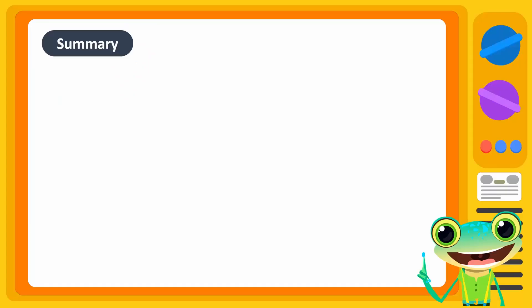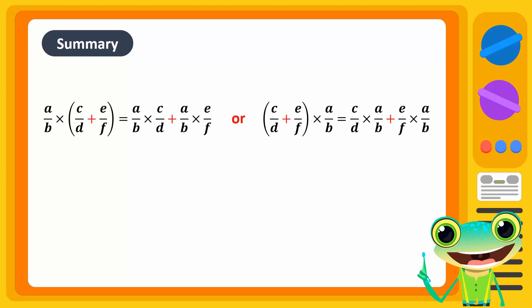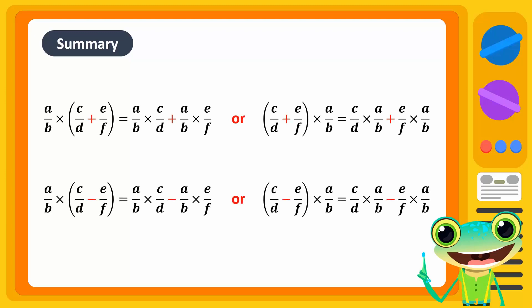In summary, for rational numbers, multiplication is distributive over addition and subtraction.